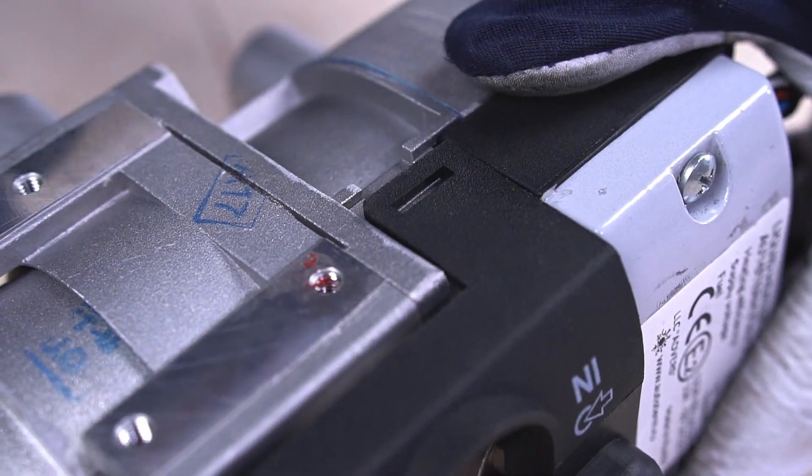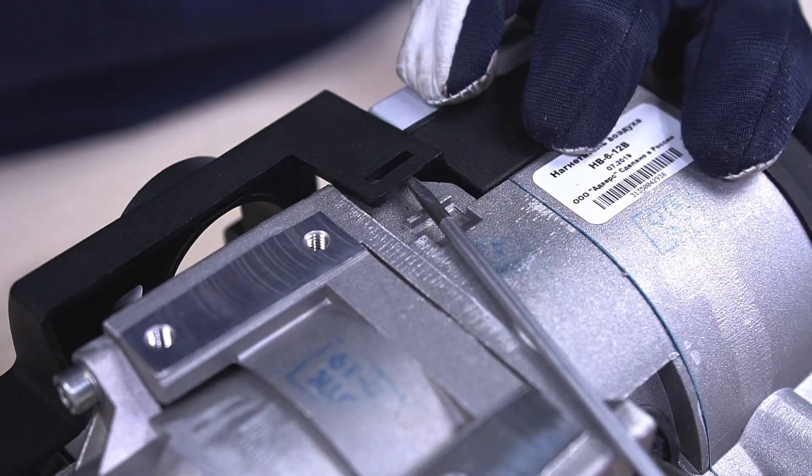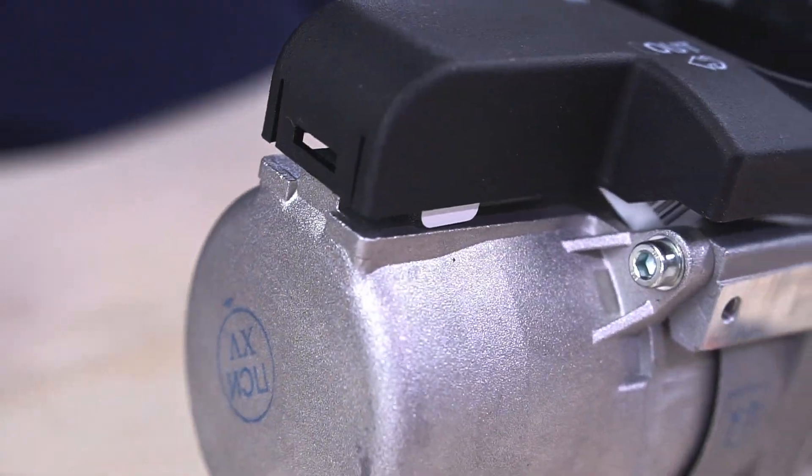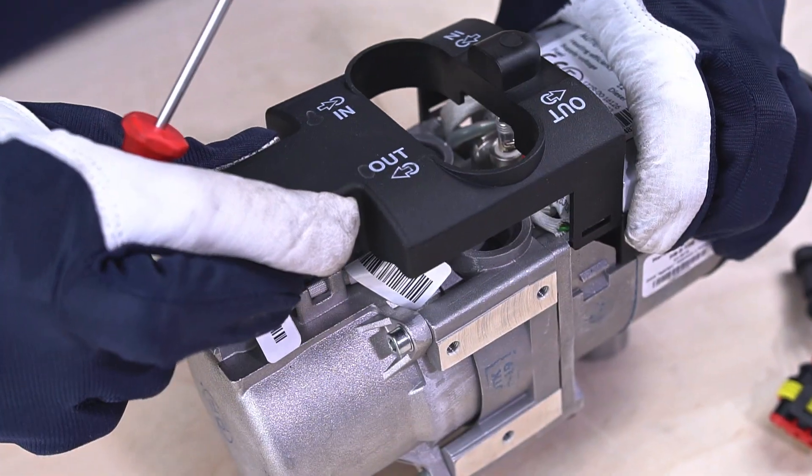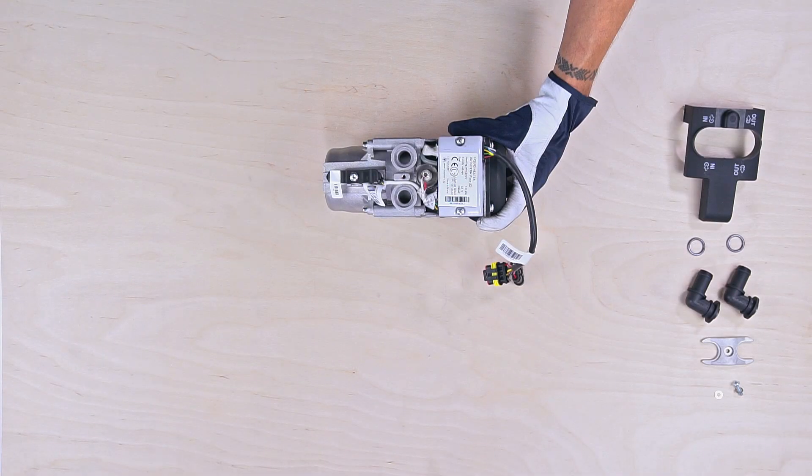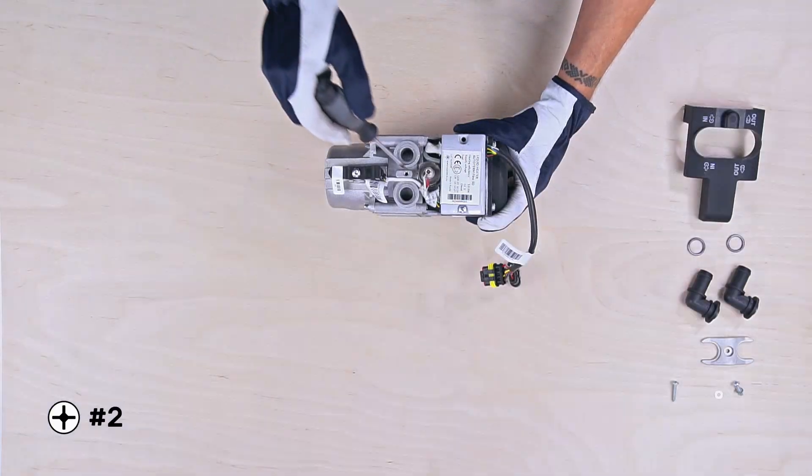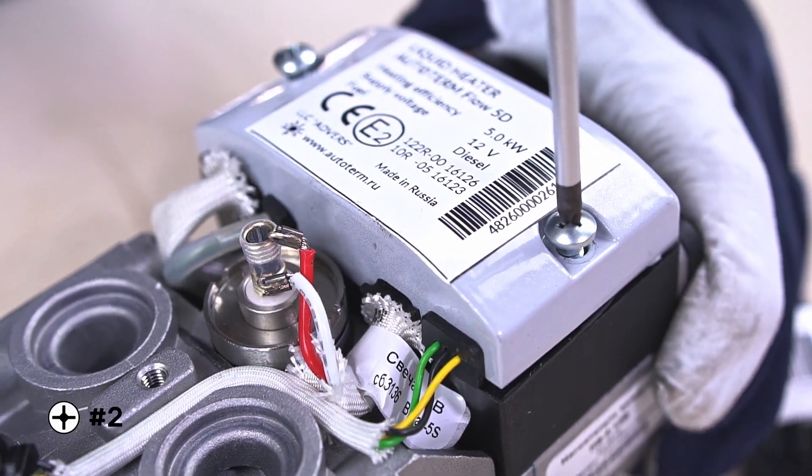Release the three fixed points of the sensor cover to remove it. With the size 2 Phillips screwdriver, unscrew both screws and release the control unit.